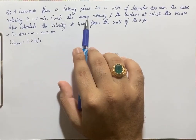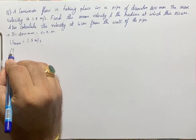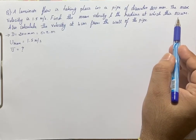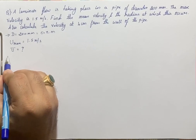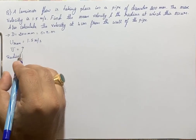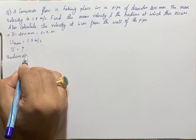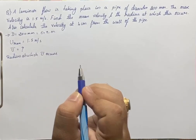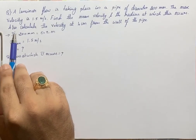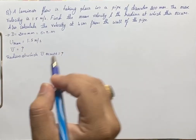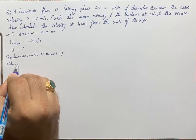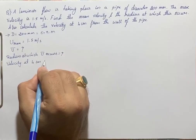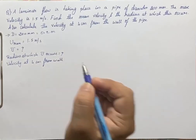We need to find: first, the mean velocity u_bar; second, the radius at which this mean velocity occurs; and third, the velocity at 4 centimeters from the pipe wall.